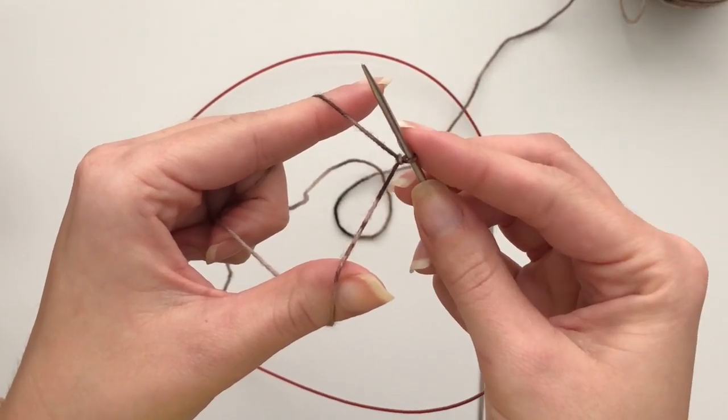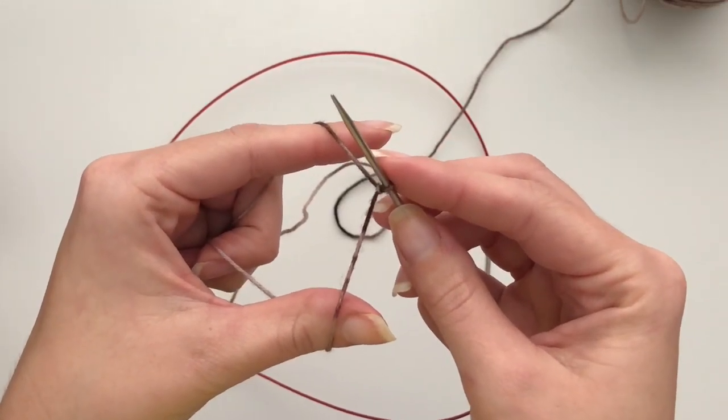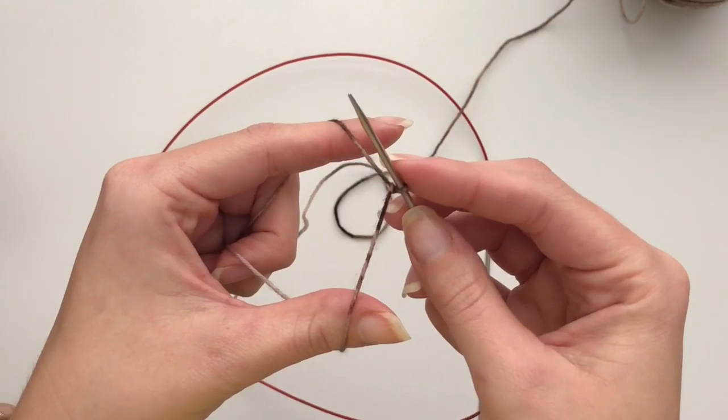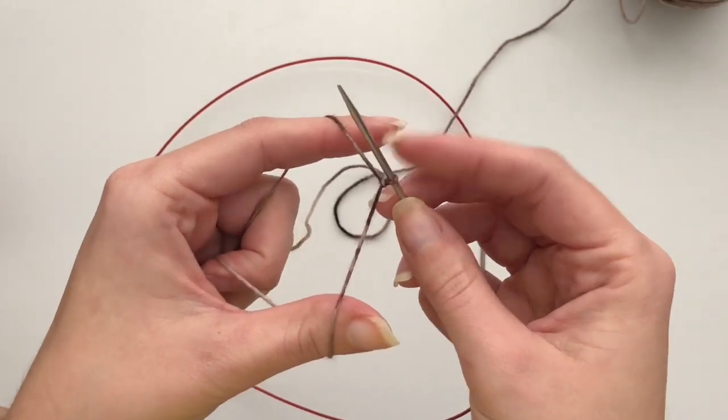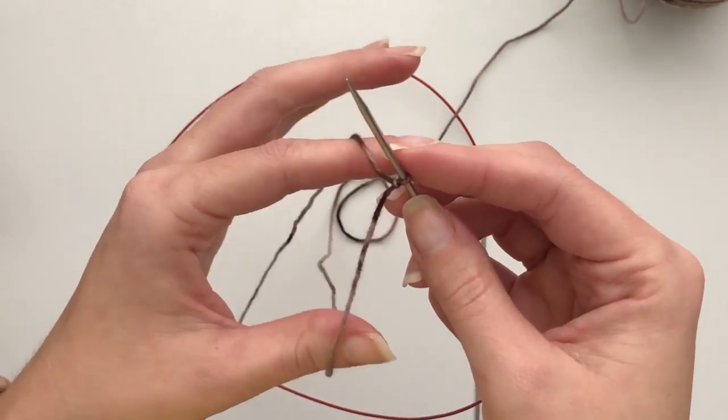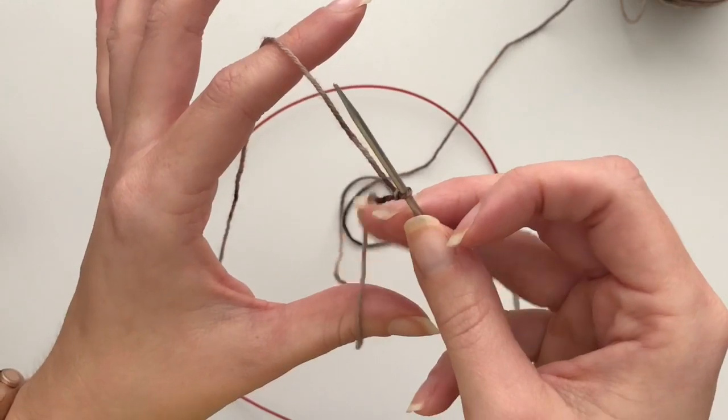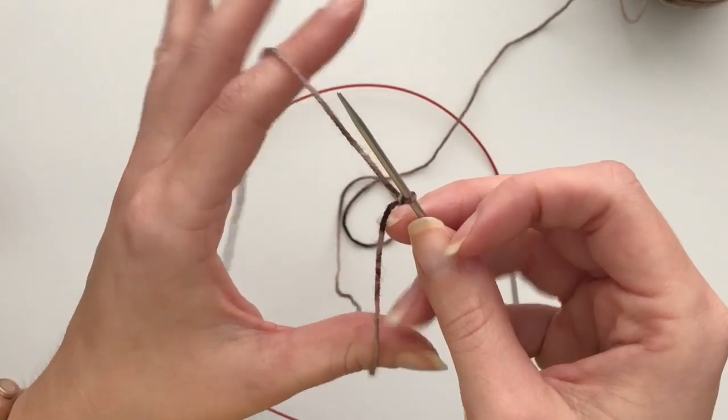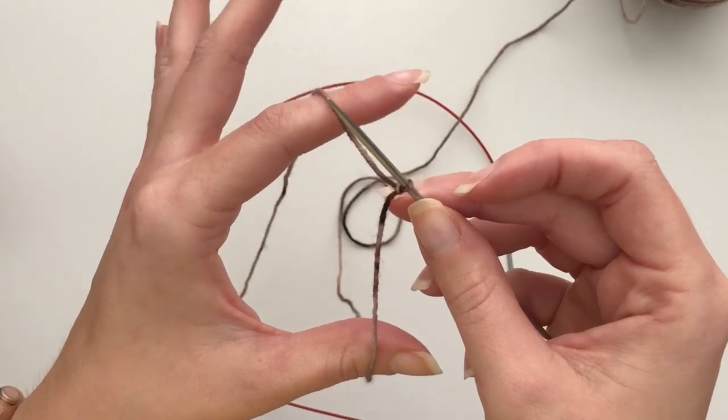So to work the German twisted cast-on, it is similar to a long tail cast-on in how you set up, but there is an additional step that you need to take throughout the process of getting the stitch on your needle. So what I have done here, this is my working end right here, my tail end over here, got my pointer finger and my thumb separating those two.